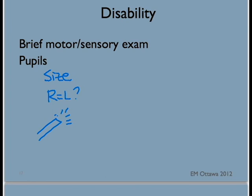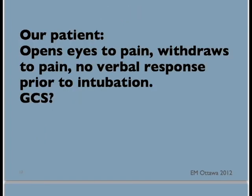Let's go back to our patient. He opens his eyes to pain, he withdraws his body, and there was no verbal response prior to intubation. What is his GCS? For eye score, he gets two. For verbal, he gets one. And for motor, he gets four. Hence, this patient's GCS is seven.